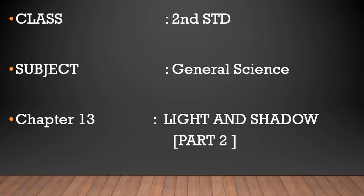In part 1 of this lesson we learnt what is light. Light is nothing but a form of energy and it travels in a straight line. There are natural forms of light — the only natural form of light is the sun.